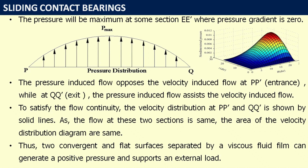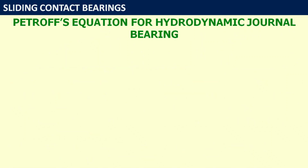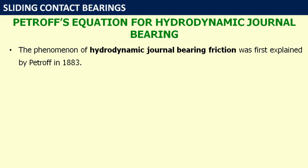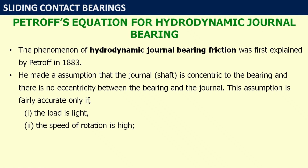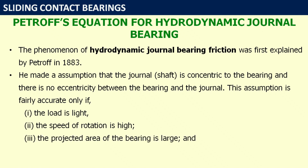Now let us see Petroff's equation for hydrodynamic journal bearings. The phenomenon of hydrodynamic journal bearing friction was first explained by Petroff in 1883. He made some assumptions: the journal (shaft) is concentric to the bearing with no eccentricity between them. This assumption is fairly accurate only if the load is light, the speed of rotation is high, the projected area of the bearing is large, and the viscosity of the lubricant is high enough.